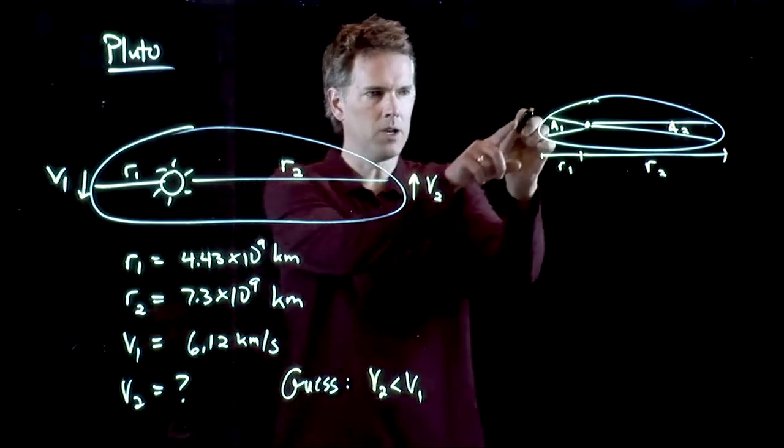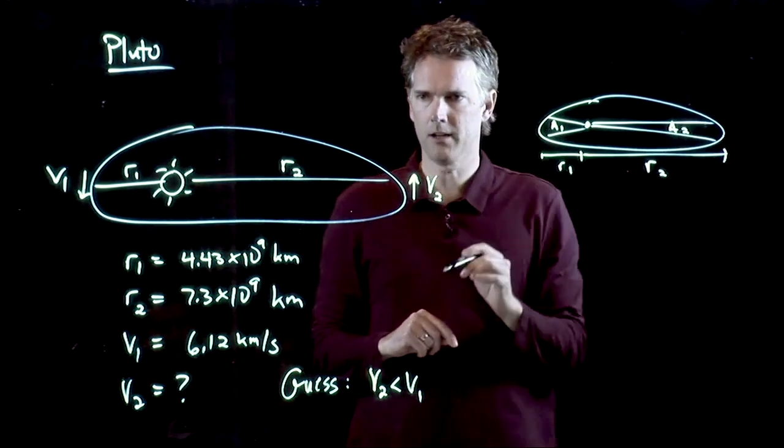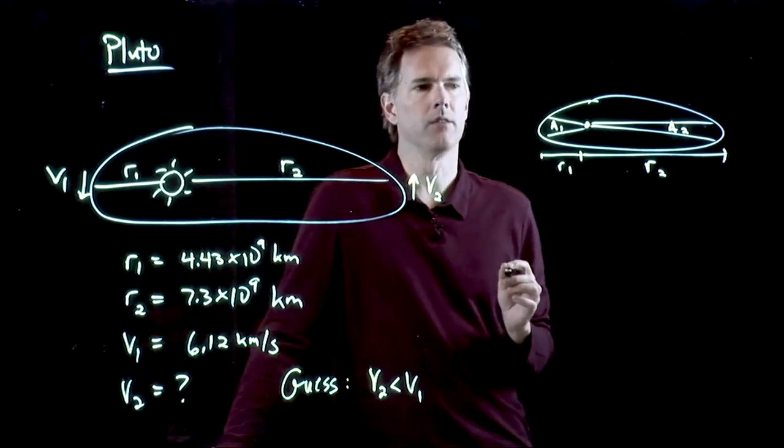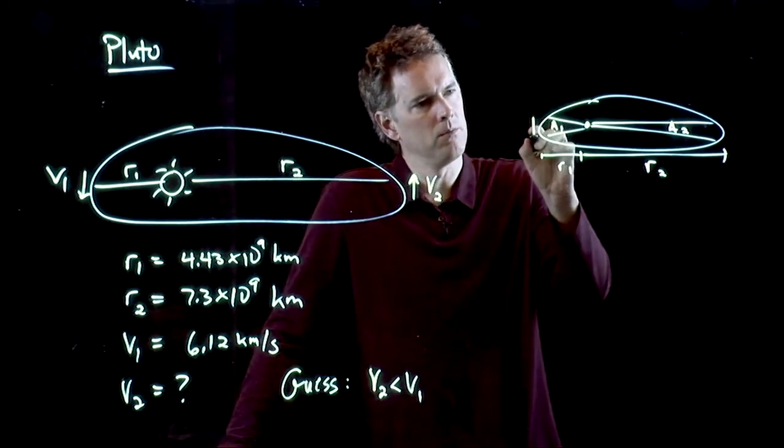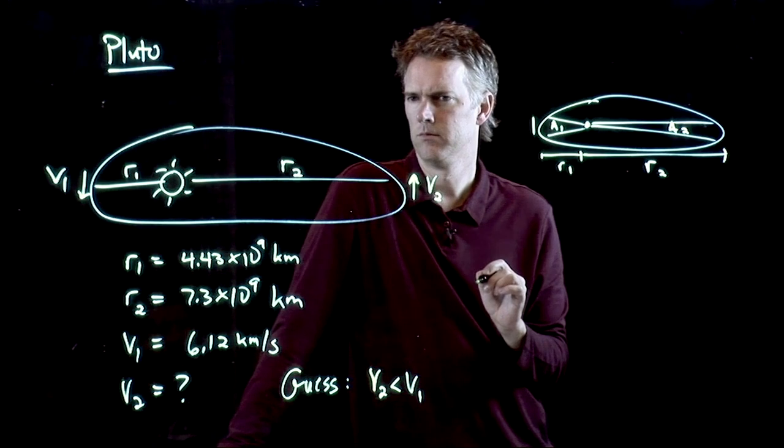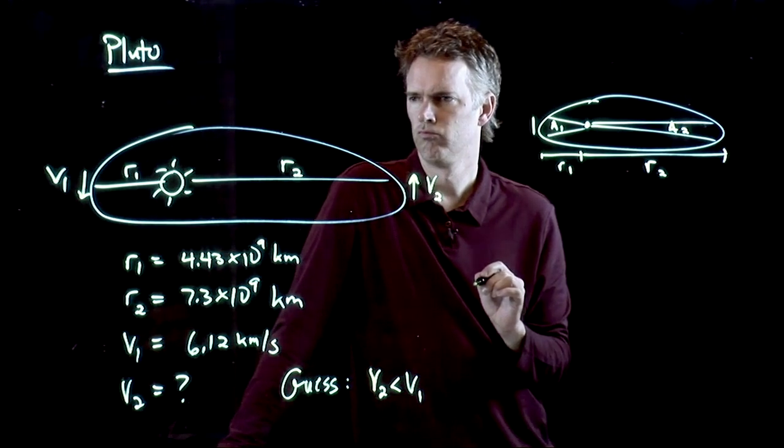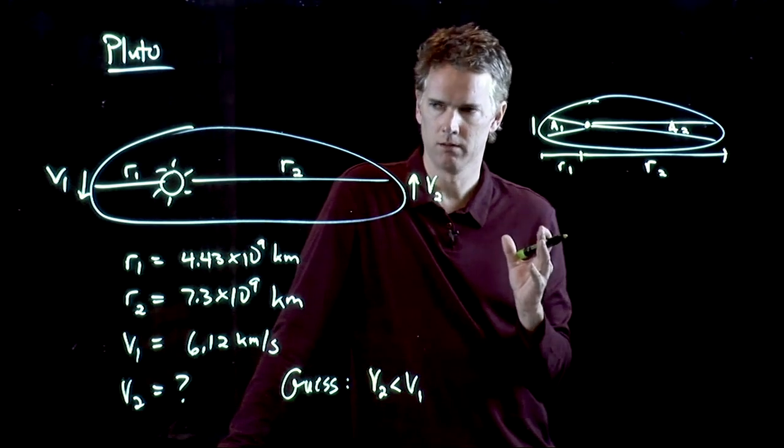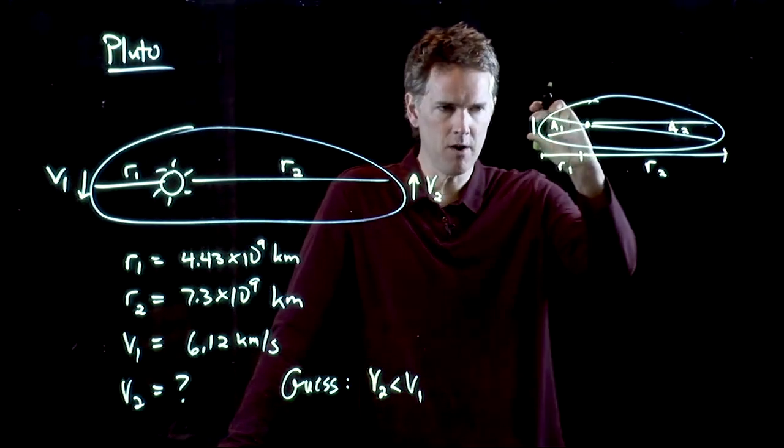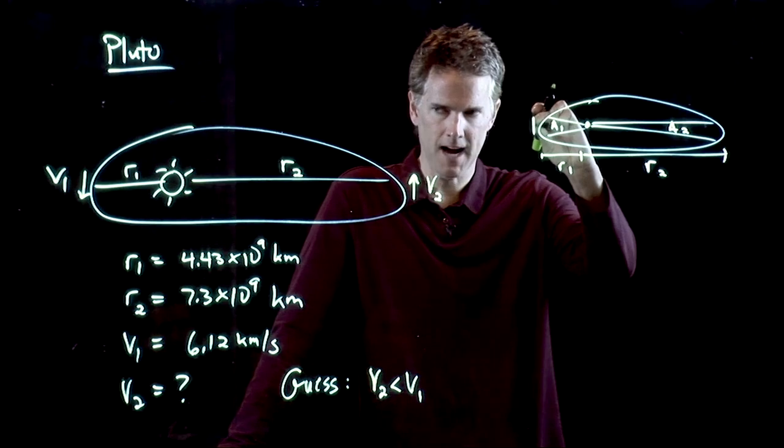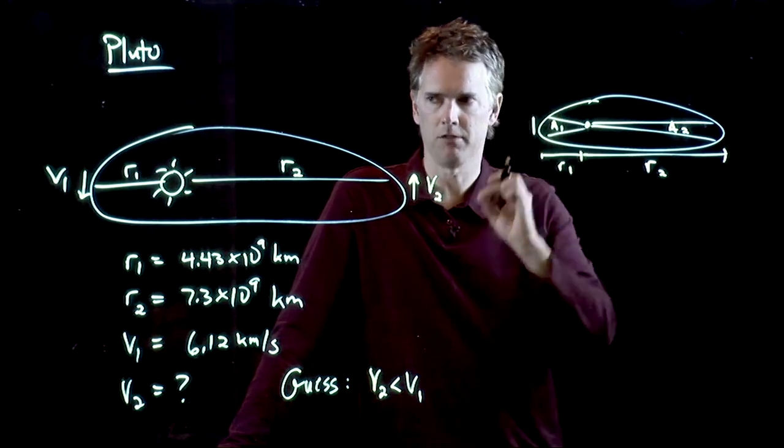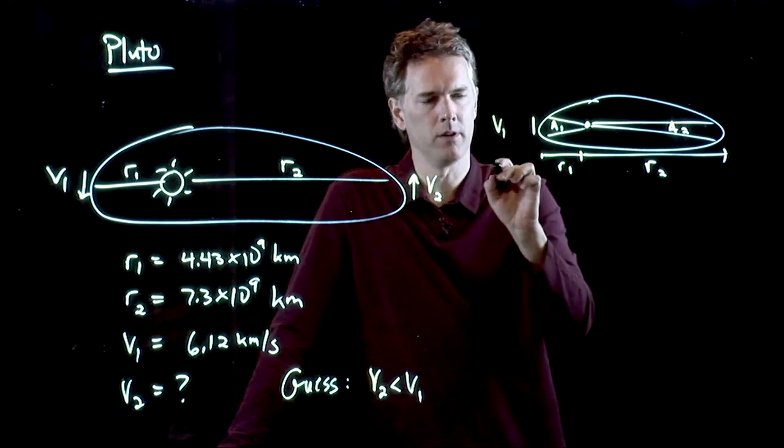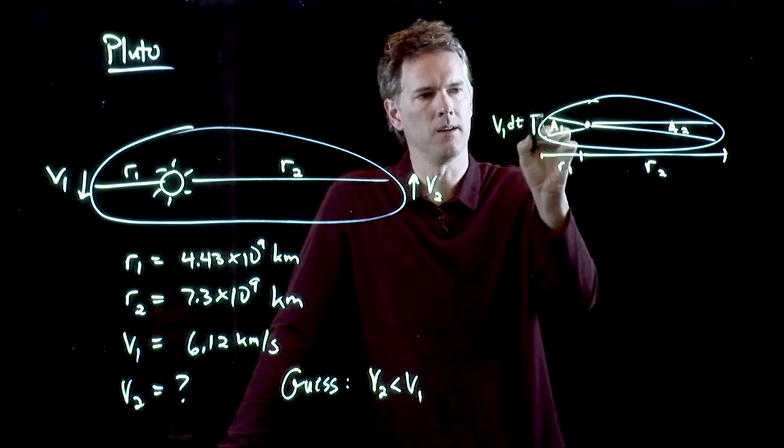If I knew the other sides of these triangles, then I could calculate exactly what the area is. Do I know this side of the triangle? Not really, right? But if it's a very small side of the triangle here, we can approximate it. It is how fast you're moving times how long did it take you.